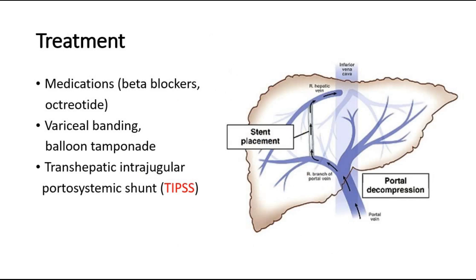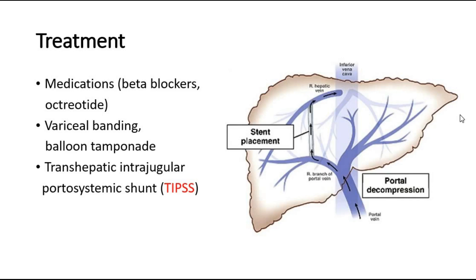To treat portal hypertension, medications such as beta-blockers or octreotide can be given. For esophageal varices with upper GI bleeding, variceal banding or balloon tamponade can be performed. The definitive treatment for portal hypertension is the transjugular intrahepatic portosystemic shunt (TIPSS). This surgery involves placement of a stent that creates an artificial channel within the liver, establishing communication between the inflow portal vein and the outflow hepatic vein, thereby creating a shunt to treat portal hypertension.